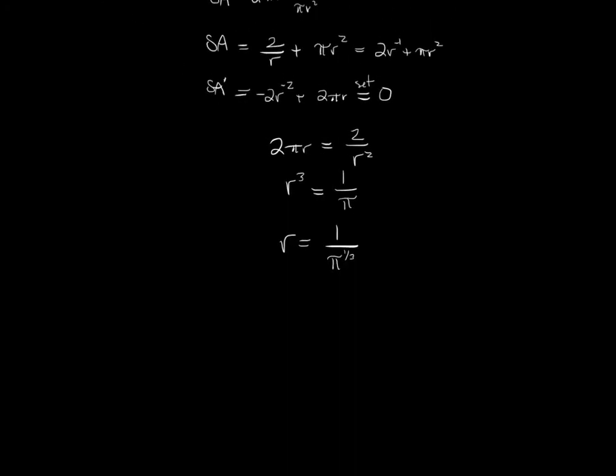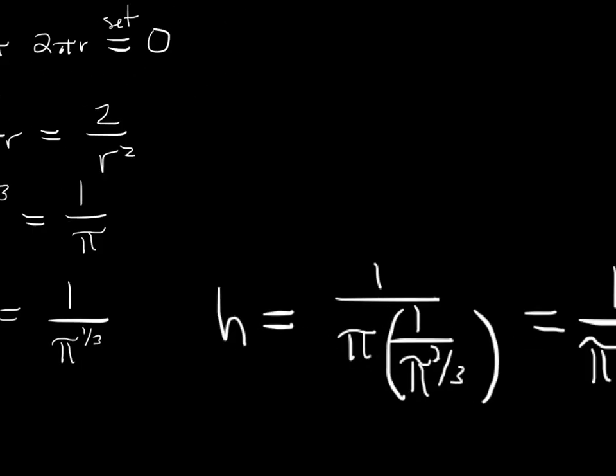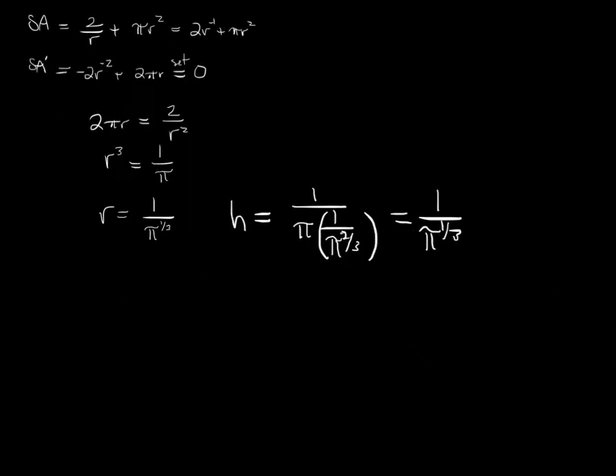Going back to where we solved for h - h was 1 over πr². So h is 1 over π times 1 over π to the 2/3, which turns out to be 1 over π^(1/3).